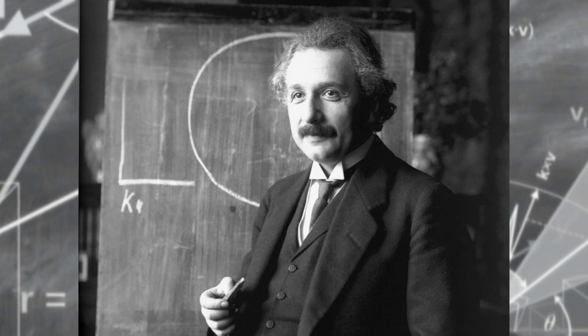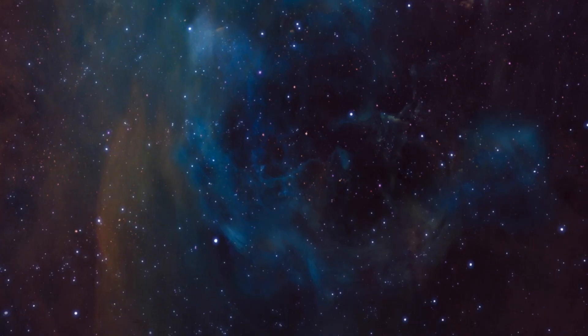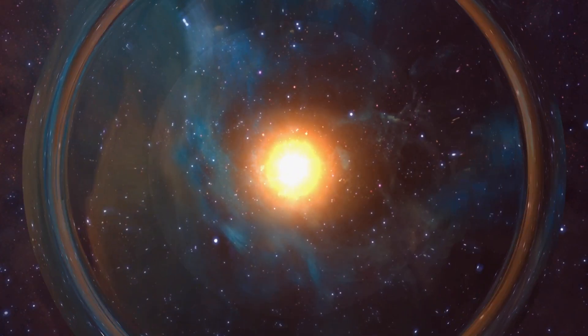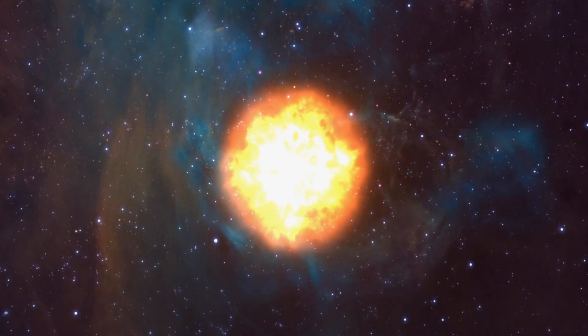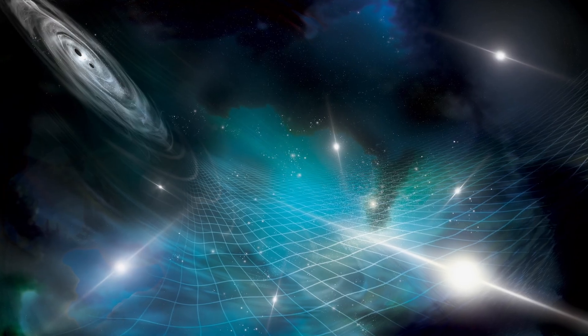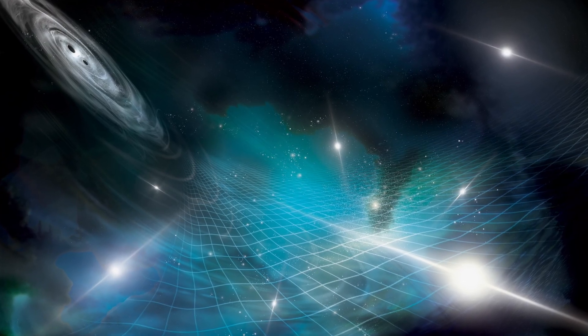Albert Einstein predicted that heavy objects and violent events in space create ripples in the universe. Waves of gravity that travel for millions of years. But he could not prove it until now.